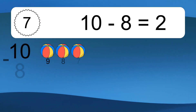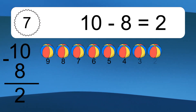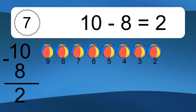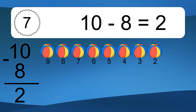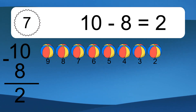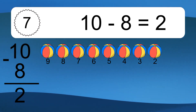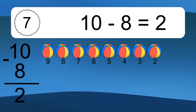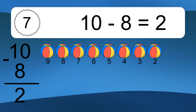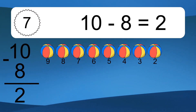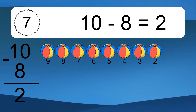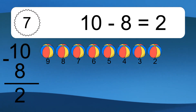10 minus 8 equals what? 10 minus 8 equals 2. Let's count it: 9, 8, 7, 6, 5, 4, 3, 2.